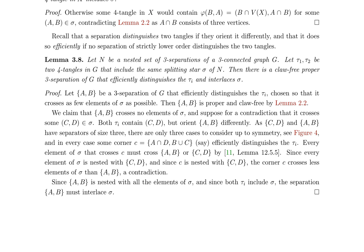The paper concludes this section by discussing the crossing properties of three-separations and their relationship with four-tangles. The authors show that if a three-separation (A, B) crosses some (C, D) element of sigma, it must cross fewer elements of sigma than (A, B), leading to a contradiction. Thus (A, B) does not cross any elements of sigma, and since it is nested with all elements of sigma, both tau_i must include sigma. This further emphasizes the importance of understanding the interplay between different types of tangles and their relationships with graph connectivity.